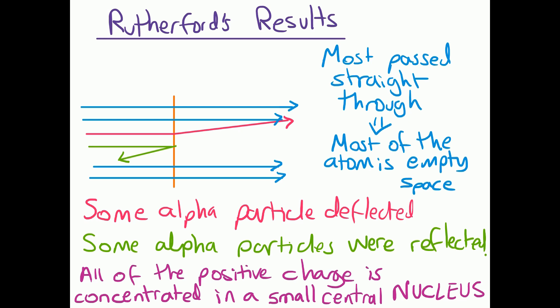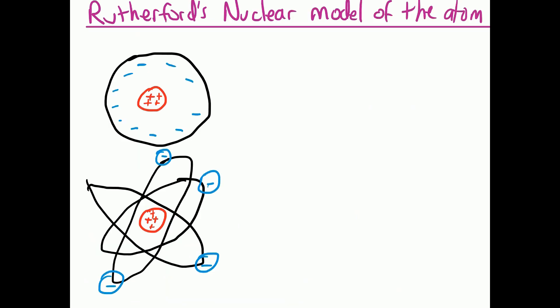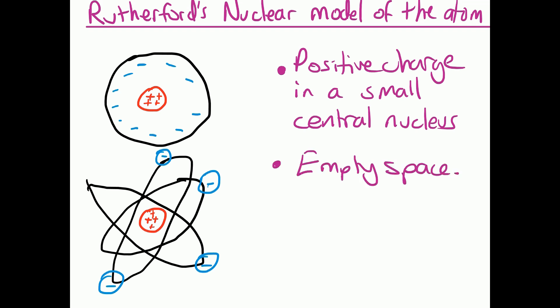So here's two different ways that you see on exam papers of Rutherford's nuclear model being represented as a diagram. We can see in both of these the positive charge in a small central nucleus, we've got lots of empty space in the atom, and we've got the electrons on the outside of the atom.